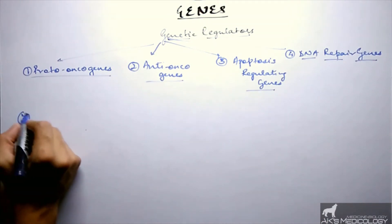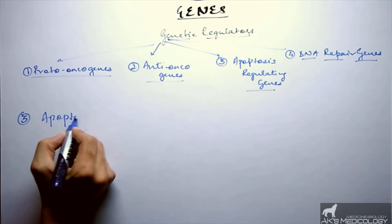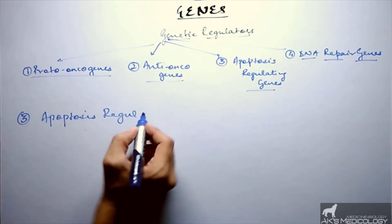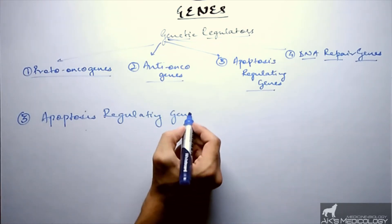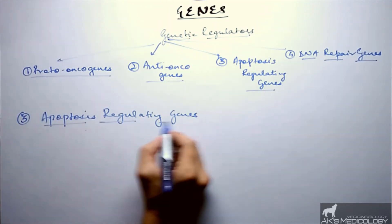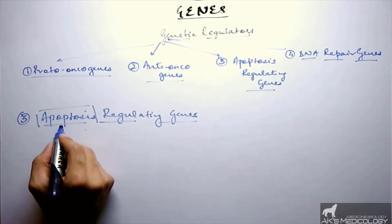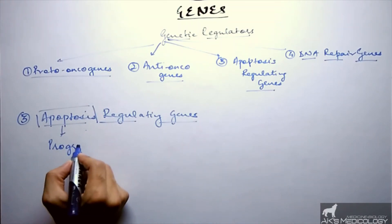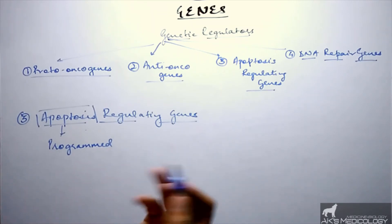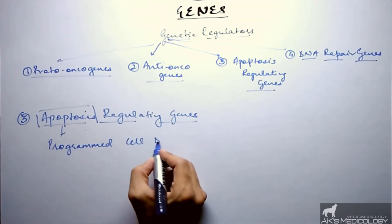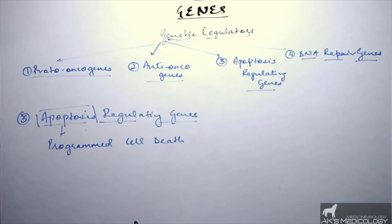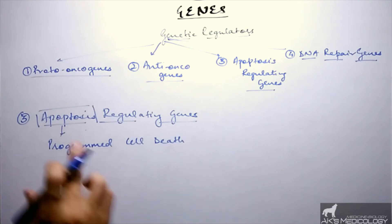The third type of genes affected are the apoptosis regulating genes. Apoptosis is programmed cell death — a pre-decided suicide of the cell. If a cell undergoes injury or recognizes it is unable to function normally, there is no need for it to survive, so the cell undergoes programmed cell death on its own. That is called apoptosis.